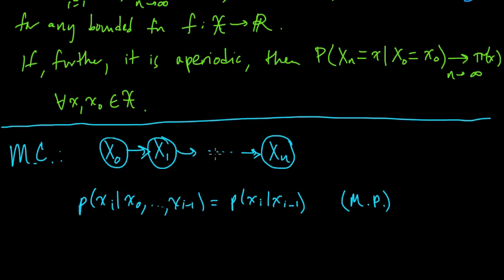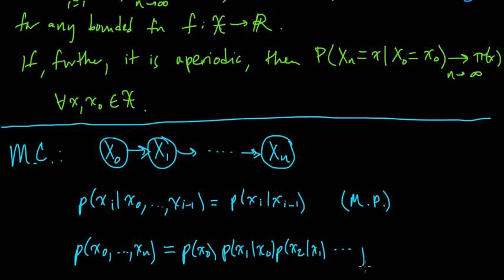And this is also, both of these are equivalent to, so all three of these are equivalent to being able to factorize the joint distribution of X0 through Xn as the probability of X0 times the probability of X1 given X0 times the probability of X2 given X1, and so on up to probability of Xn given Xn minus 1.